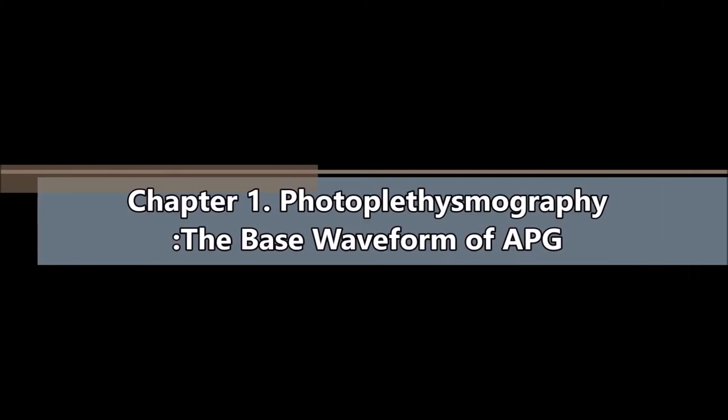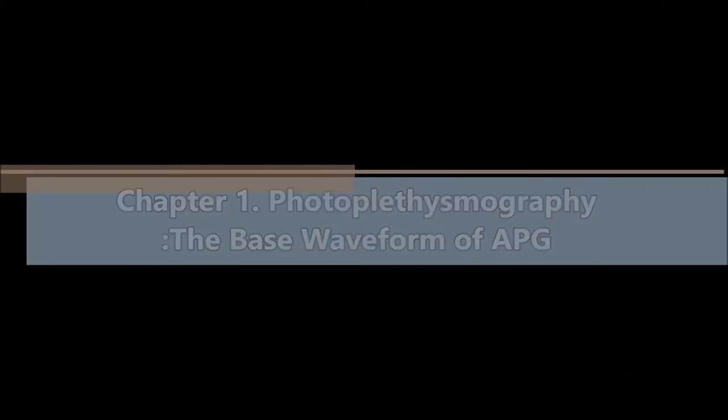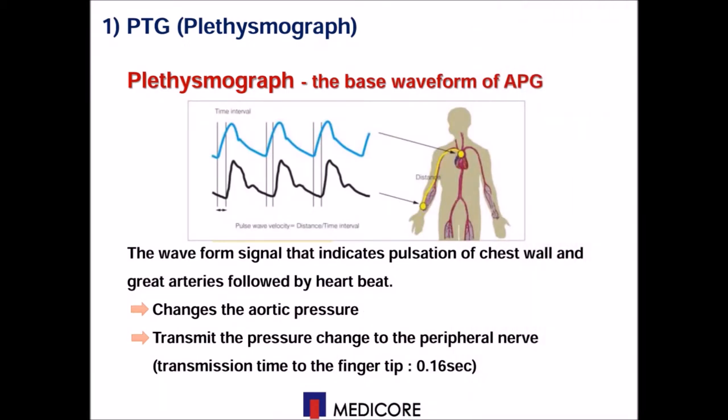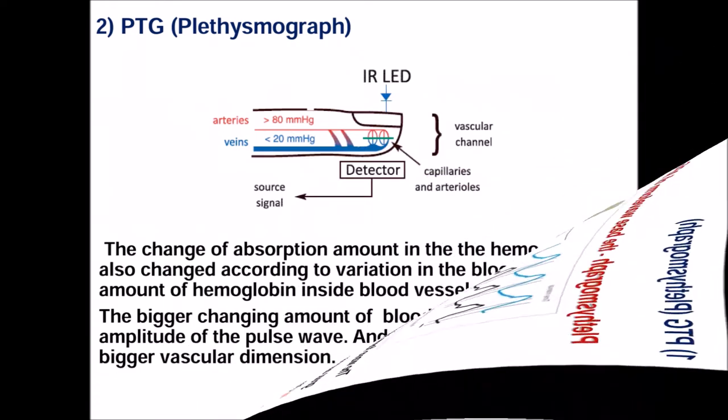Today, we will talk about the APG, which is an accelerated plethysmograph for pre-screening arterial health. When you put your finger in a finger probe, it will be detected through infrared light from the top to the bottom sensor, and based on this data, you can figure out how much hemoglobin is present through the light.